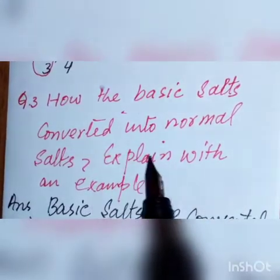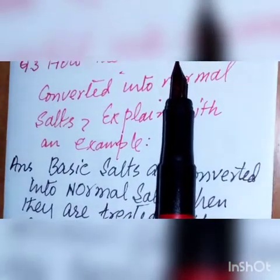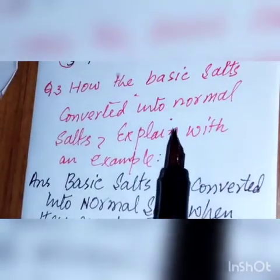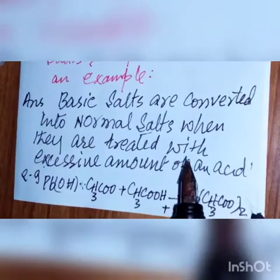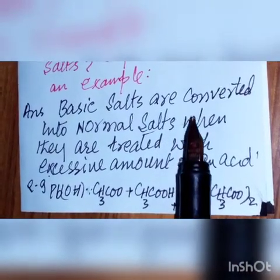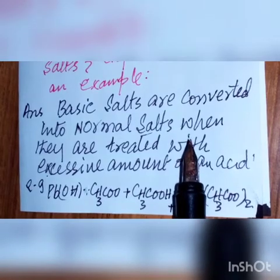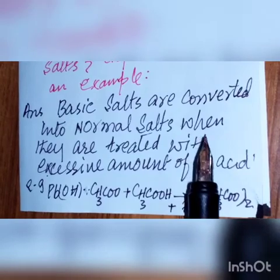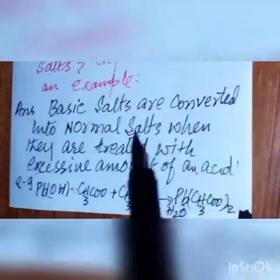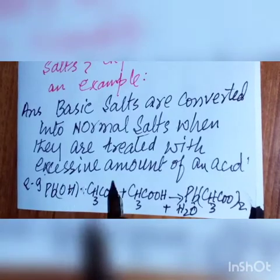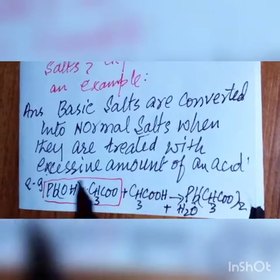Question number three: how are basic salts converted into normal salts? Explain with an example. Basic salts, when treated with an excessive amount of an acid, are converted into normal salts due to complete ionization of OH⁻ ions. The OH⁻ is replaced by negatively charged ions from the acid.